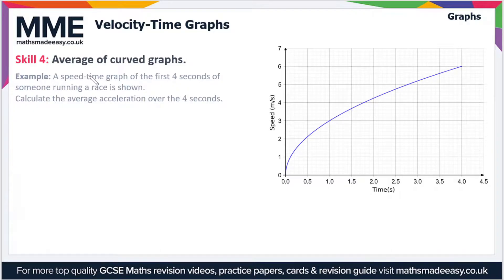The first skill is finding the average of curved graphs. Specifically, we're looking at the average acceleration or the average gradient of the graph. The example says: a speed-time graph of the first four seconds of someone running a race is shown. Calculate the average acceleration over the four seconds.